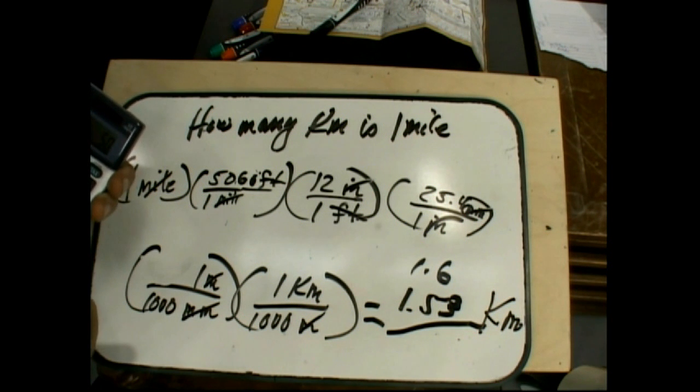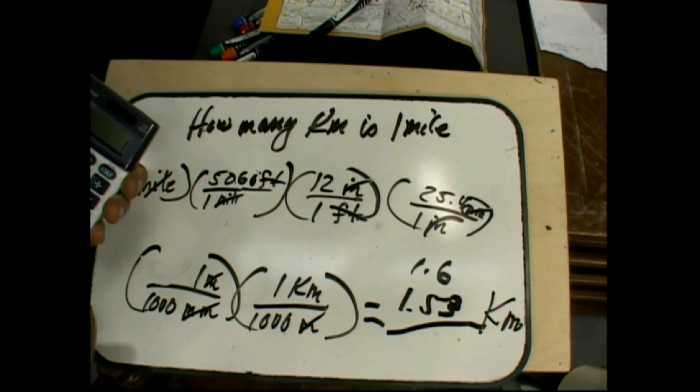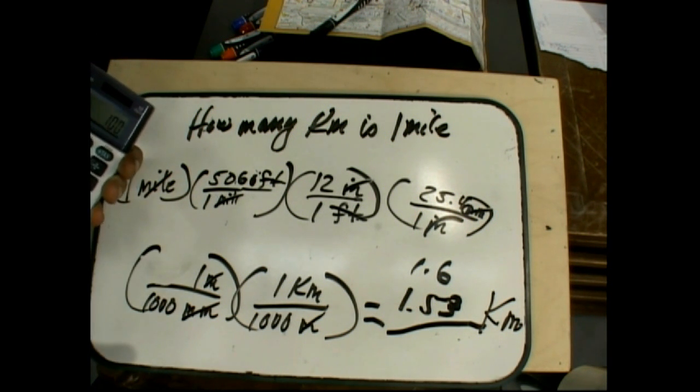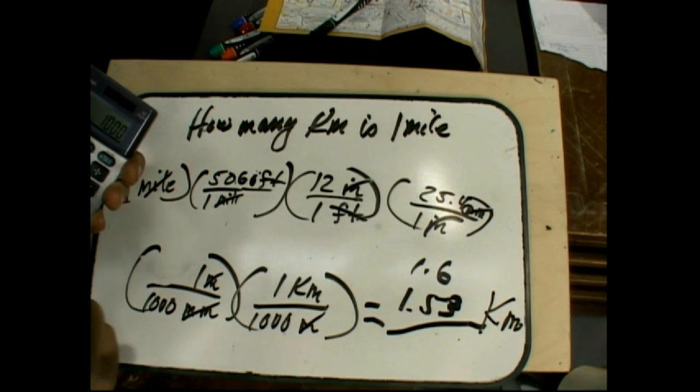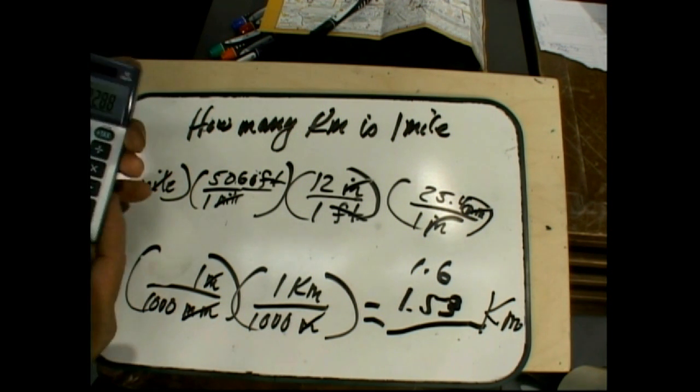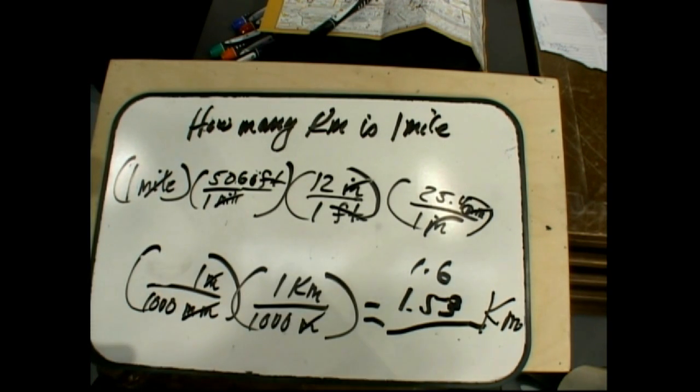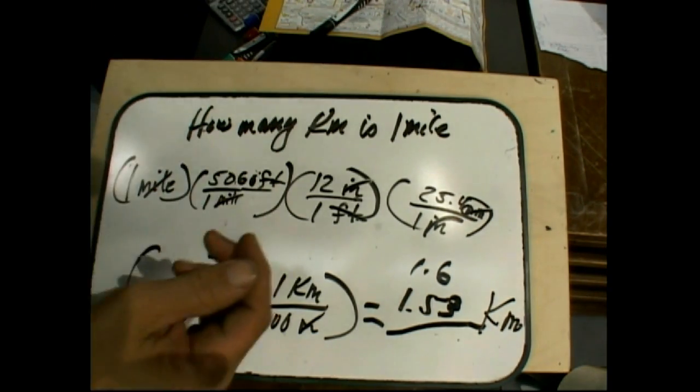So 5.060 times 12 times 25.4 divided by 1,000, 1,000 divided by 1,000 equals 1.54 again. So it didn't make that much of a difference. Anyway, that's length.